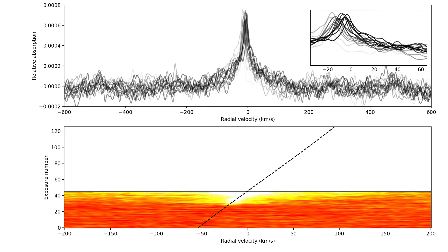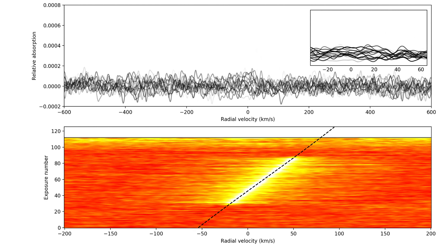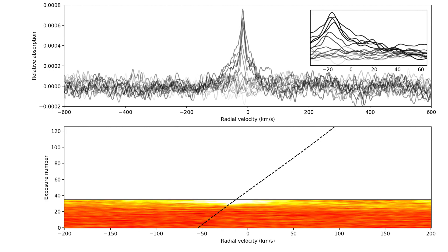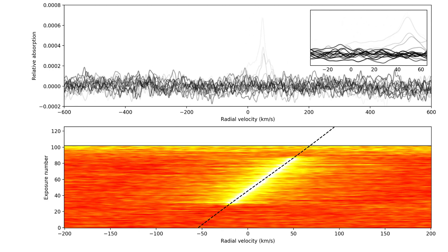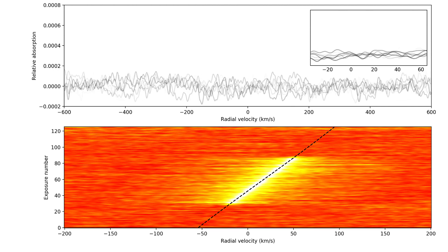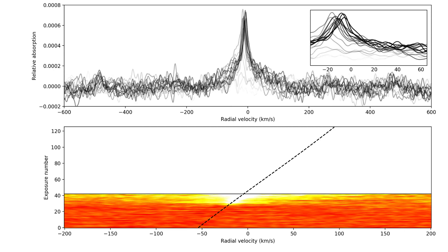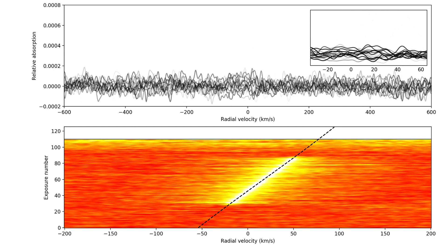We can therefore construct the cross-correlation function along two dimensions, where the horizontal direction is the radial velocity and the vertical direction is the time series. The changing radial velocity of the planet results in a slanted feature, and the angle of this feature is directly proportional to the physical orbital velocity of the planet times the sine of the inclination, which is close to 1 because the planet is transiting.